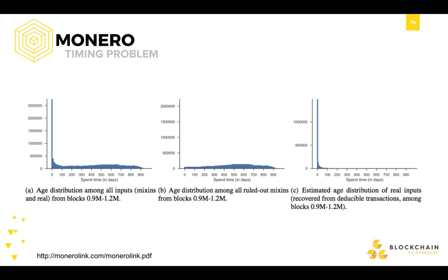Question from audience: does the 80% figure include zero mix-in transactions? The answer is that the 80% is from all transactions that include one or more mix-ins. Also, there is a real timeline involved — after January 2017, things changed a lot. Throughout 2016, there were several upgrades that changed the probability of tracing transactions, which we'll discuss in a moment.